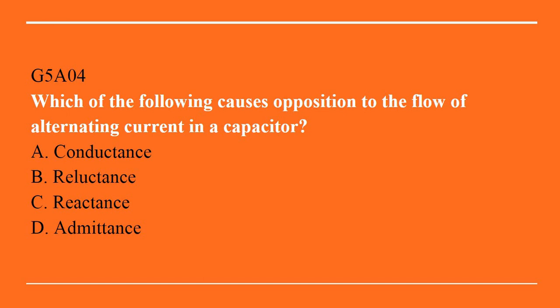G5A04: which of the following causes opposition to the flow of alternating current in a capacitor? A. Conductance. B. Reluctance. C. Reactance. Or D. Admittance. The correct answer is C: reactance.